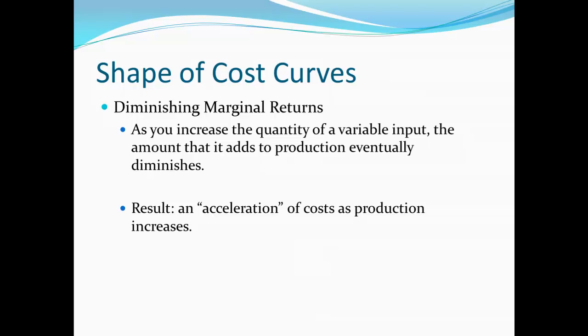Just a couple more minor points regarding cost curves. We're really getting into the question of what do our costs look like as we change production? Fixed costs are fixed. Variable costs will naturally go up as we produce more — we need more materials, more labor, and so forth. But how do they increase?